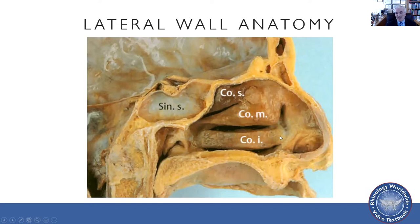The lateral wall of the nose — this is a cadaver section — shows the inferior turbinate, the middle turbinate, and the superior turbinate. Here's the nostril, the area of the nasal valve, the nasal vestibule, and here's the concha. The question is, where does the air actually flow? Does the air just flow like a sheet through a straight path, or does it flow equally through every one of these air spaces in the nose?